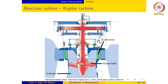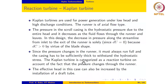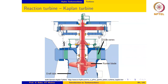In this lecture, we will discuss another vertical axis reaction turbine that works with water, namely the Kaplan turbine. The Kaplan turbine is very similar to the Francis turbine in that they are both reaction turbines and both vertical axis hydraulic turbines. However, the Kaplan turbine is an axial turbine, as we have seen in this figure. The flow through the rotor is axial in the case of the Kaplan turbine.